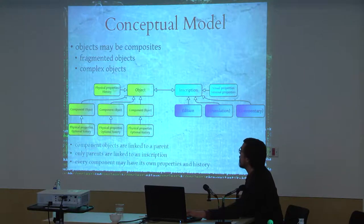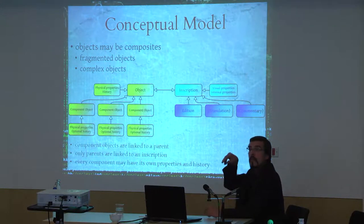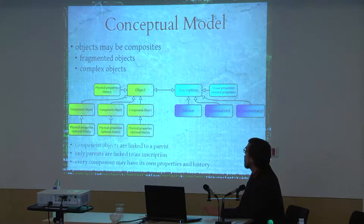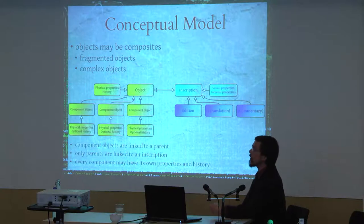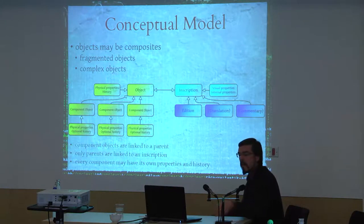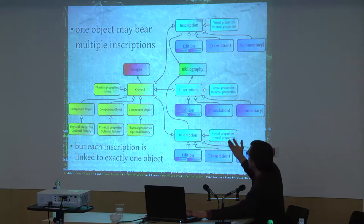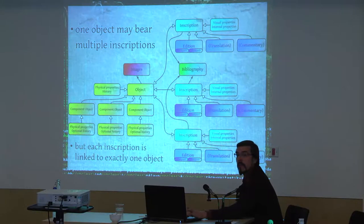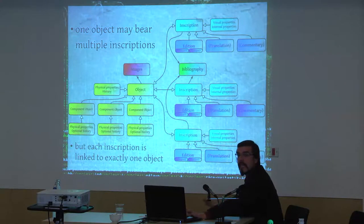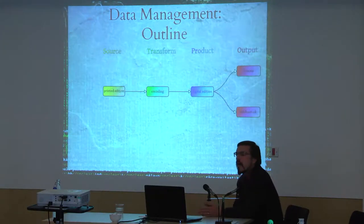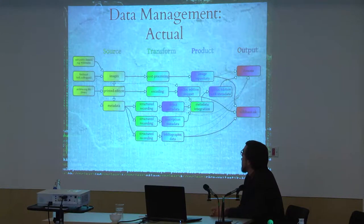Objects can consist of multiple parts, so there may be component objects, but there's always a hypothetical or virtual superordinate object, and it's only the superordinate object that is linked to an inscription. So if an object consists of parts, it's always the master — the parent object — that is linked to an inscription. In this way, more complex relationships can also be represented in a fairly simple way, which I believe is a good midline for our purposes.